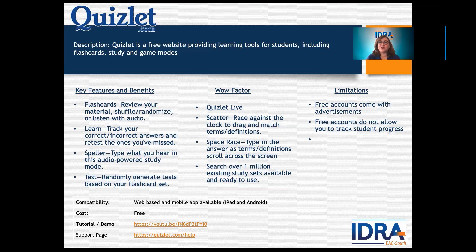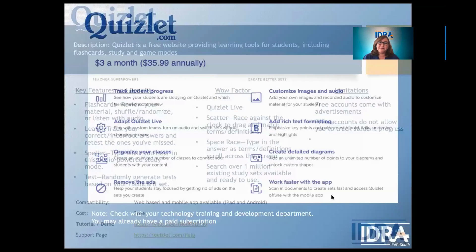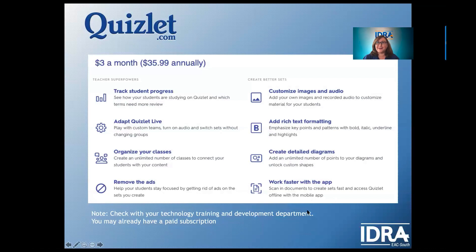Teachers can create study decks with flashcards, and there's a 'learn' feature that tracks correct and incorrect answers — good for self-testing so students know where they're lacking and can focus study time there. In science, it's super important to know vocabulary, and there's a speller option for that. Limitations: you get advertisements with the free account, and free accounts don't allow you to track student progress — students track their own. The paid account is three dollars a month or thirty-five dollars annually.